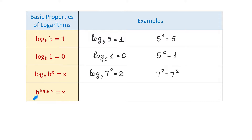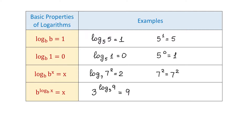The last property is B raised to the exponent log base B of x equals x. Just like above, when this base is the same as this base, then this result is the same as this result. For example, 3 to the exponent log base 3 of 9 equals 9. If we evaluate this logarithm, 3 to what power makes 9? That would be 2, so this exponent is equal to 2. Then 3 to the second power equals 9. These are the four basic properties of logarithms.